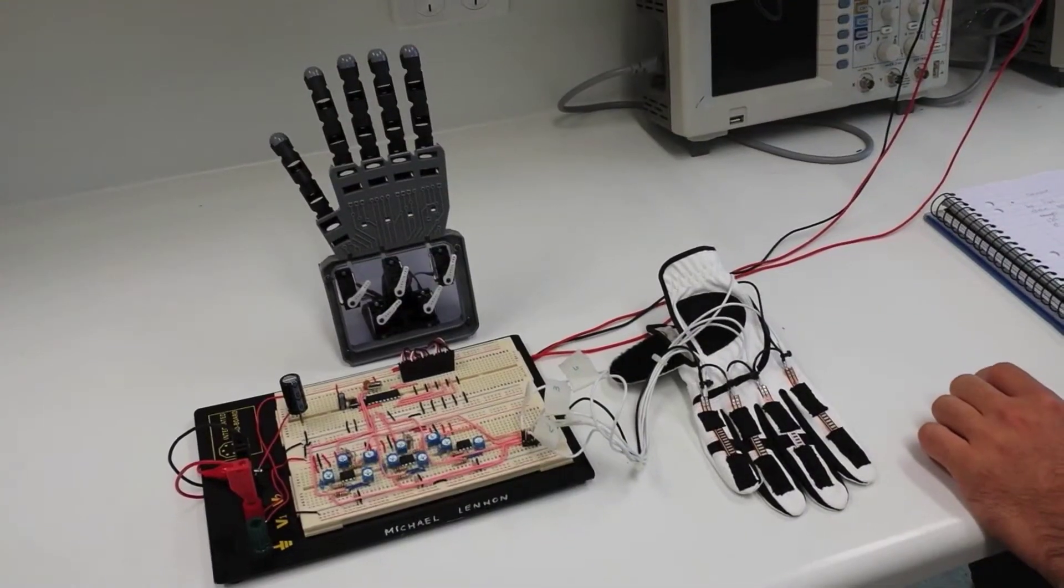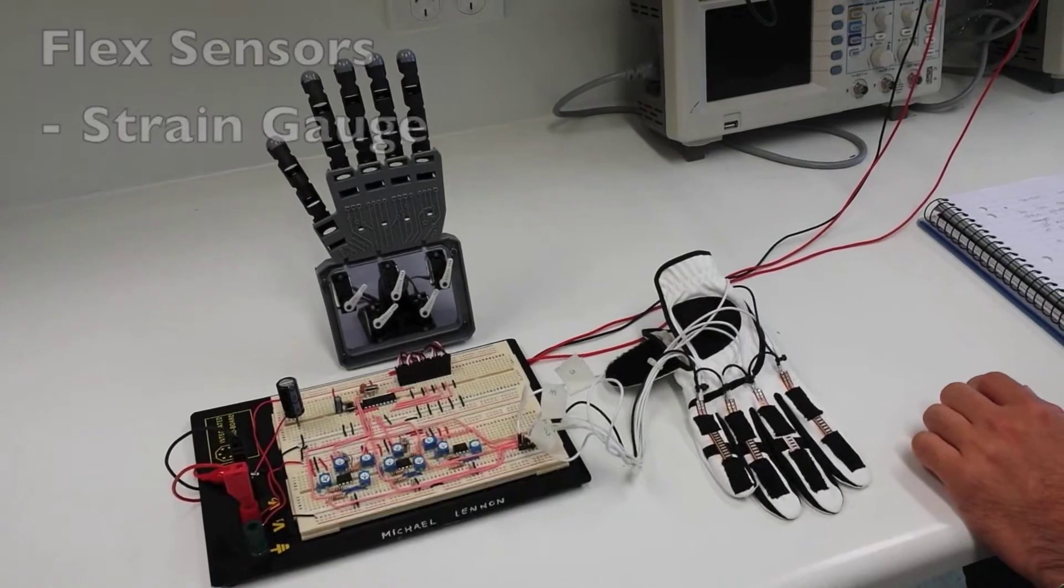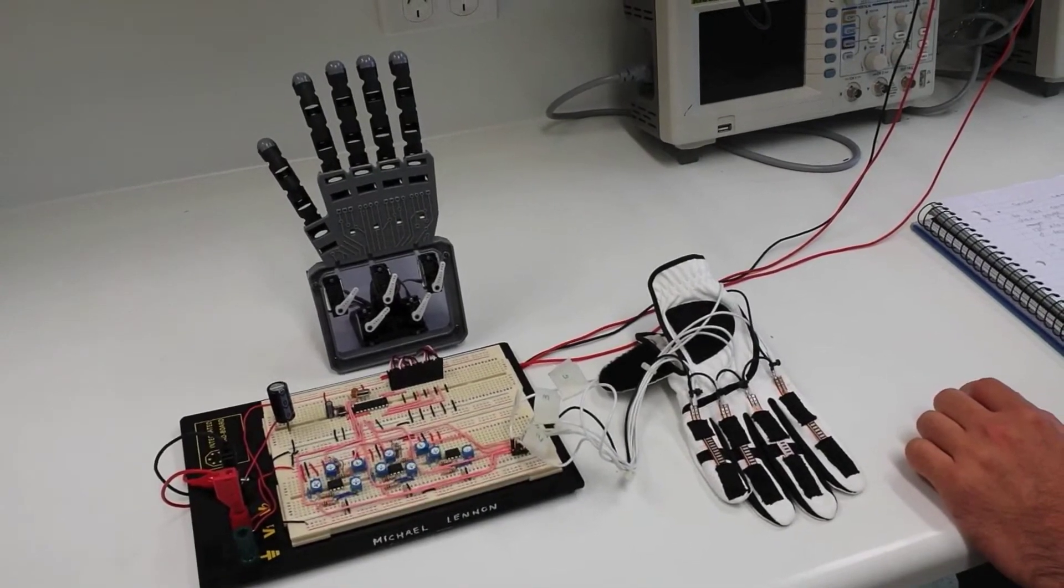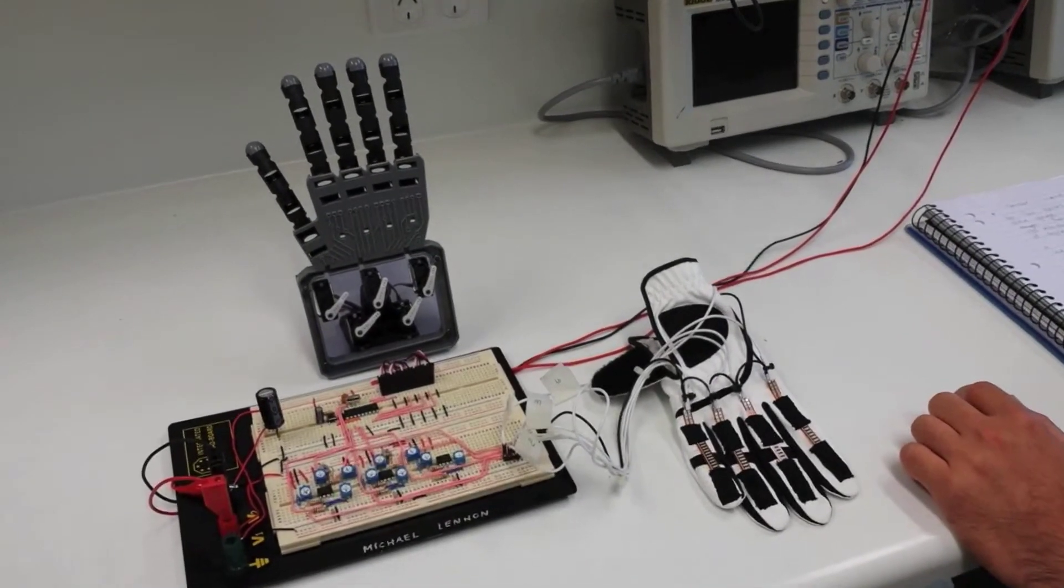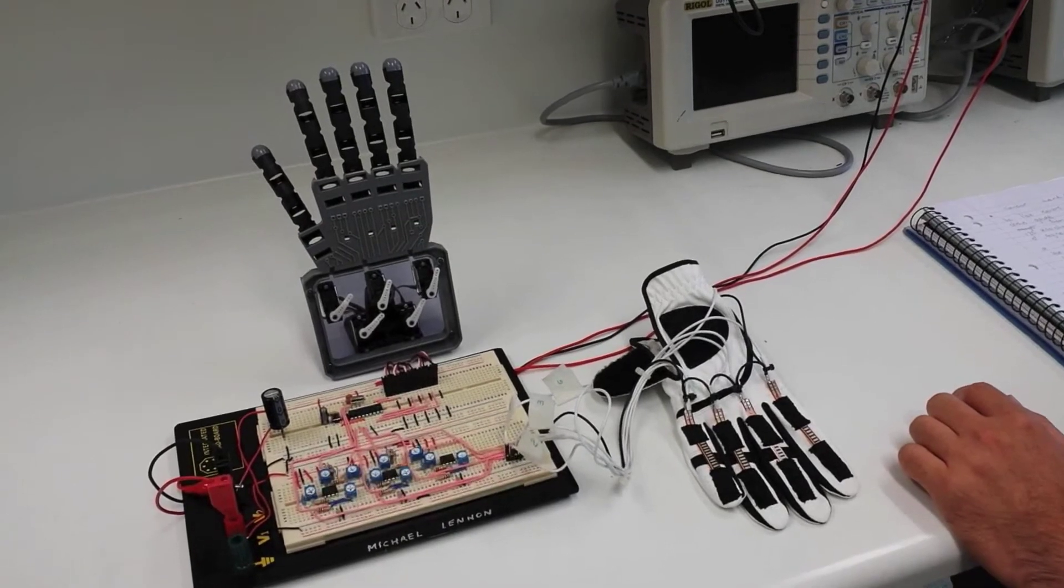Flex sensors work like a strain gauge. They vary the resistance from 25 kilo ohms to 125 kilo ohms with a range from 0 to 90 degrees.